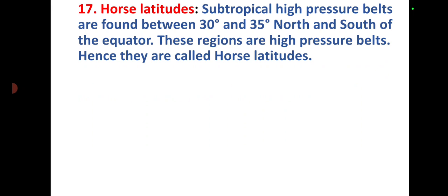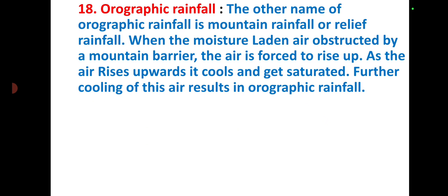Orographic rainfall: The other name of orographic rainfall is mountain rainfall or relief rainfall. When the moisture laden air obstructed by a mountain barrier, the air is forced to rise up. As the air rises upwards, it cools and gets saturated. Further cooling of this air results in orographic rainfall.